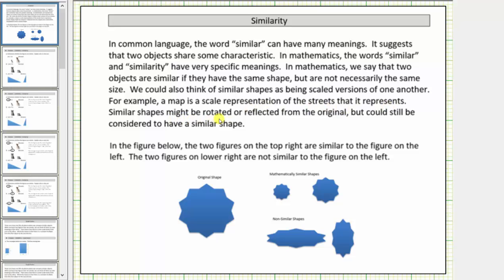Similar shapes might be rotated or reflected from the original but could still be considered to have a similar shape. In the figures below, the two figures on the top right are both similar to the figure on the left, the original figure. Notice how all the figures are the same shape, just different sizes or different scaled versions of one another.